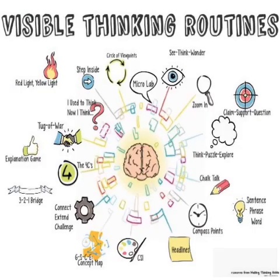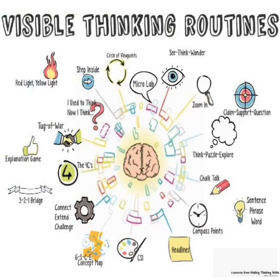I also learned that it's necessary to have a myriad of visible thinking routines to observe ongoing learning. I used to think that there was only a limited number of ways to observe this type of learning — things such as asking questions or exit tickets. However, now I think that every lesson should include a myriad of different routines to assess ongoing learning. This will allow me to obtain feedback on when I should revisit concepts and identify individual and group information gaps.